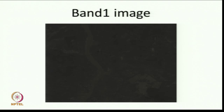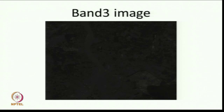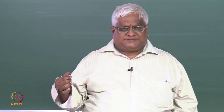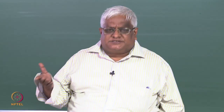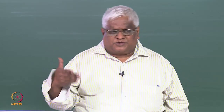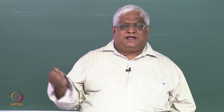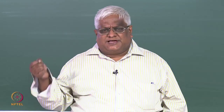This is how the band 1 image looks — as you can see, it is really very difficult to see anything there. Similarly band 2, this is band 3, and this is band 4. The reason is that our monitors support 0 for black and 255 for white. So if the maximum gray value is of the order of 60 or 70, you practically do not see anything in the image. Those who are acquainted with image processing would know that one needs to do some sort of enhancement.